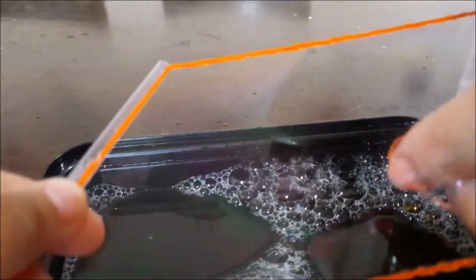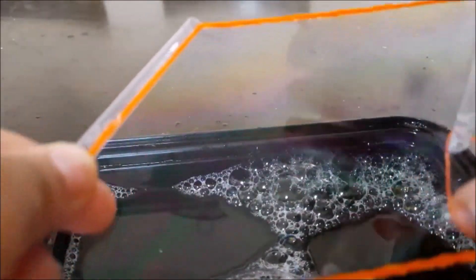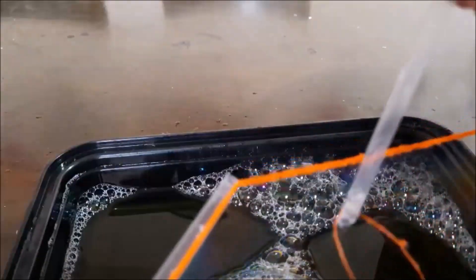Now let's try to put a hole in our bubble membrane. So we will put the thin thread in the bubble, like this, and we will poke to make a hole.